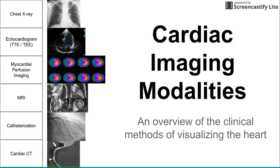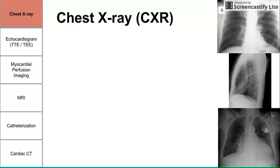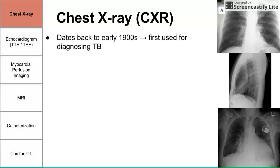Let's begin with chest x-ray, often abbreviated as CXR for billing purposes. It's very commonly used and dates back over 100 years ago — first used to diagnose TB. If you saw cloudiness in the lungs, you knew there might be some bacterial infiltrate there.